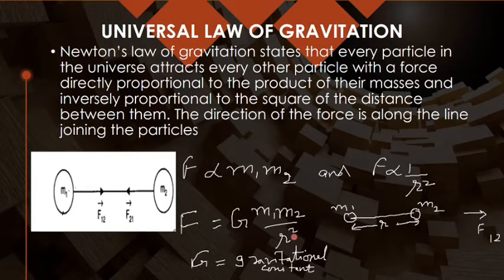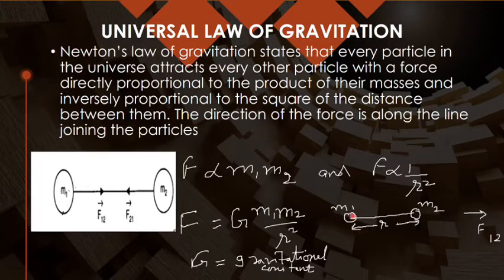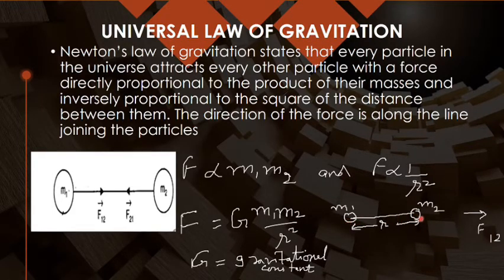G here is the capital G — the proportionality constant known as the gravitational constant. The distance r between the two bodies is always taken from the centers of the two objects.